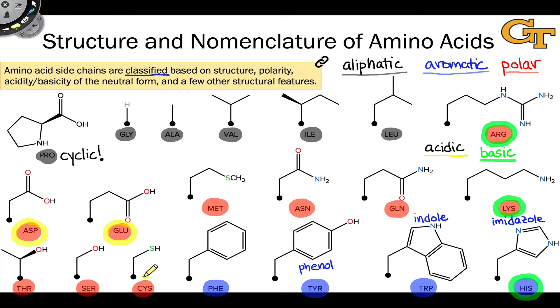Cysteine, with its relatively acidic thiol group, also has the potential to act as an acidic amino acid — donate a proton — forming a thiolate, S-.